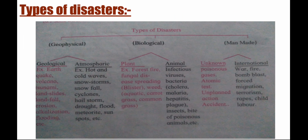Man-made disasters are of two kinds. Unknown or domestic disasters include events where, by mistake, a gas leak occurs in a chemical industry, a blast takes place, or an accident occurs on a road or in a building. International disasters are ones where many nations take part — like war, bomb blasts, forced migration, terrorism, rapes, and child labor.